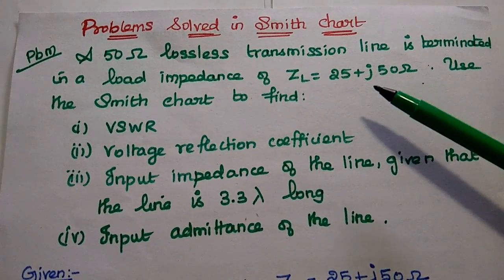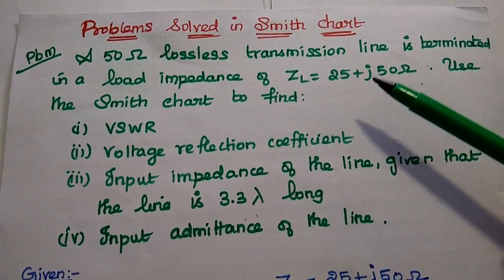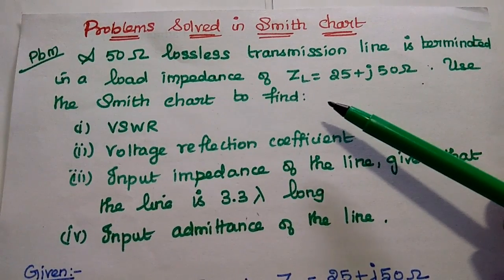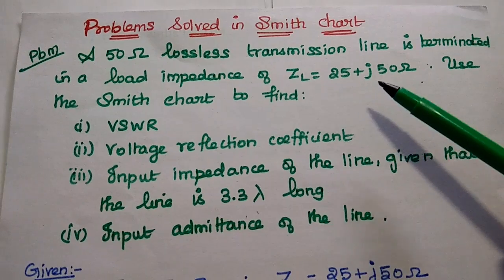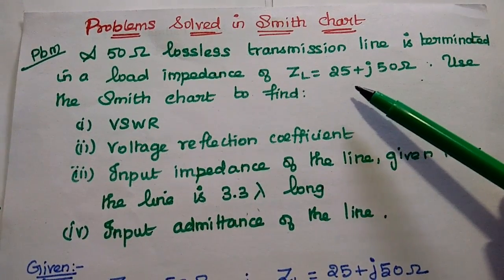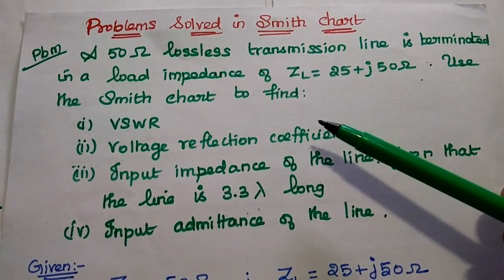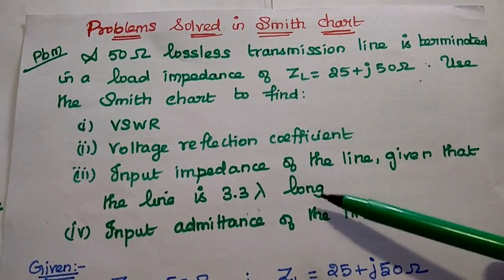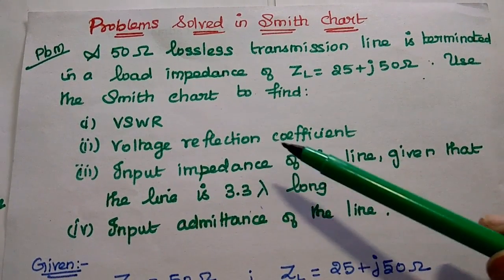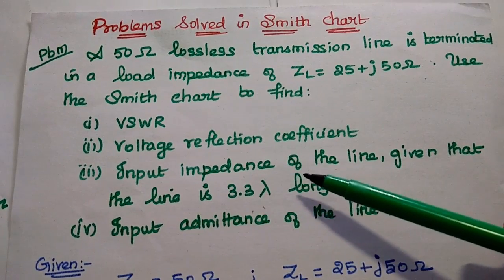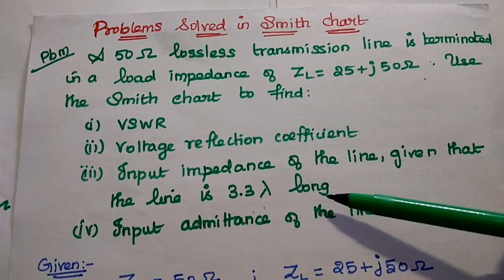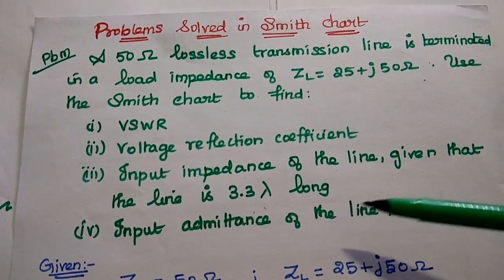We are going to solve one important problem in impedance matching using the Smith chart. A 50 ohm lossless transmission line is terminated in a load impedance ZL equal to 25 plus j50 ohm. Use the Smith chart to find the following parameters: voltage standing wave ratio (VSWR), voltage reflection coefficient, input impedance of the line given that the line is 3.3 lambda long, and input admittance of the line.